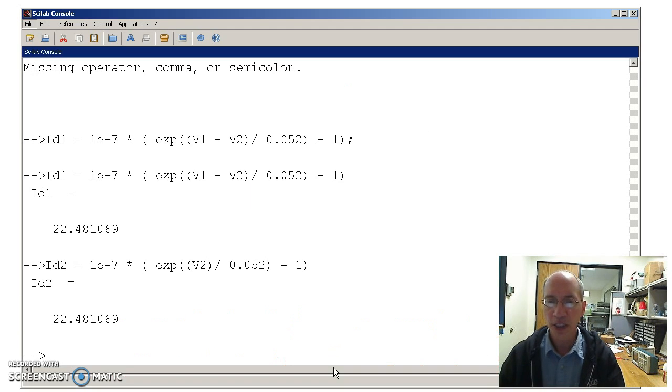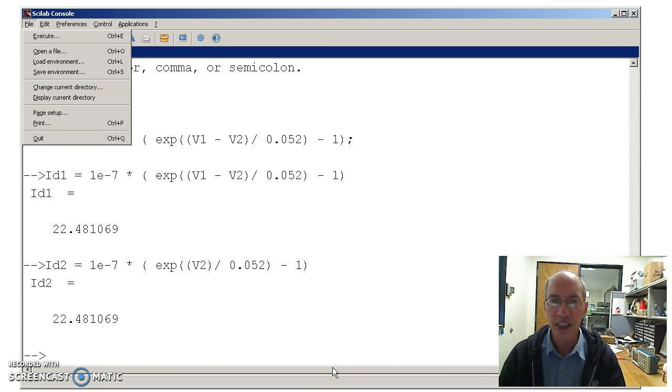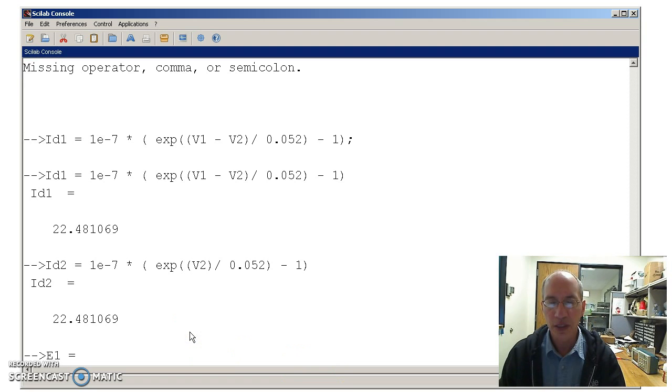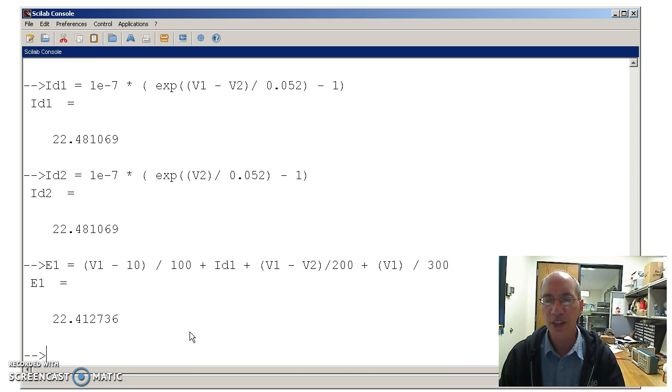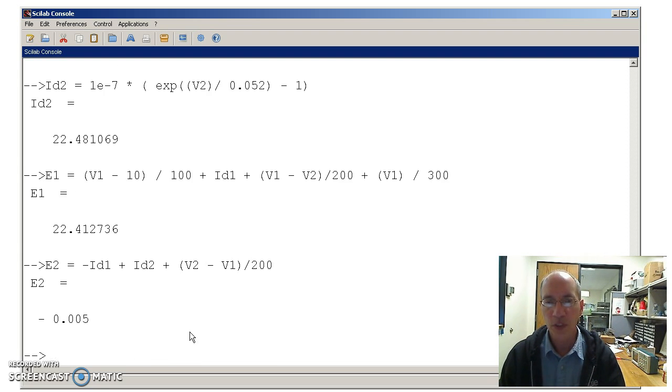If I'm incorrect, it will be something non-zero. Let's call that an error. I get the first equation. On the first equation, there's the current. It doesn't quite add to zero. And the second equation, it doesn't quite add to zero.